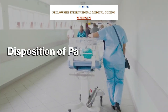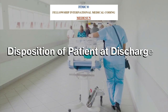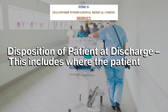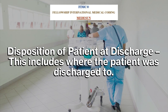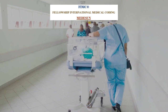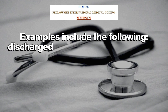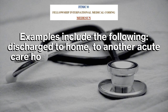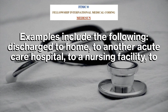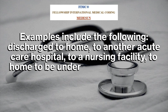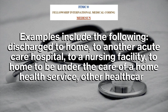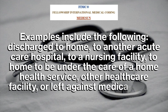Disposition of patient at discharge — this includes where the patient was discharged to. Examples include: discharged to home, to another acute care hospital, to a nursing facility, to home to be under the care of a home health service, other health care facility, or left against medical advice.